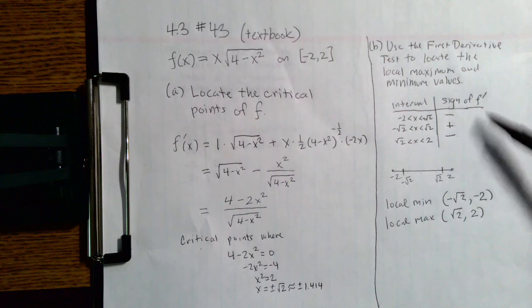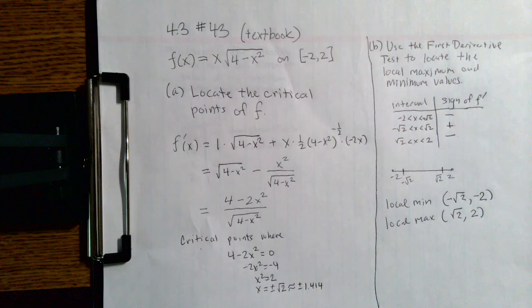Within each of those intervals, we want to see what is happening with the sign of the first derivative. The only place where the sign of the first derivative could change is at a critical point. Doesn't mean it necessarily will change sign there, but those are the only places where we could see sign changes. So that's why it's important to divide up the interval at those critical points.